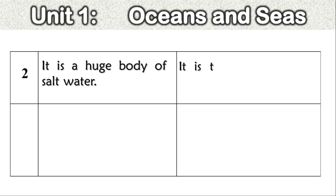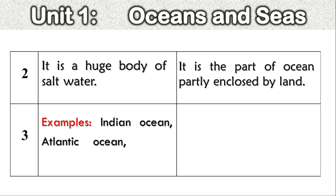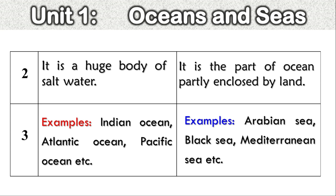Sea: It is a part of ocean partly enclosed by land. Examples of oceans: Indian Ocean, Atlantic Ocean, Pacific Ocean, etc. Examples of seas: Arabian Sea, Black Sea, Mediterranean Sea, etc.